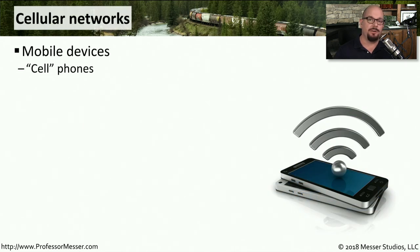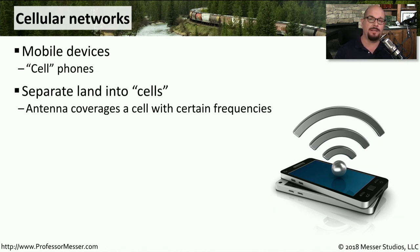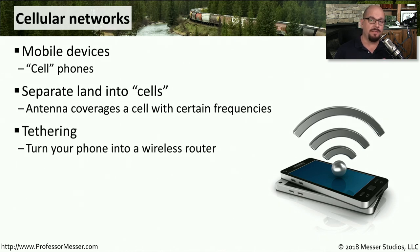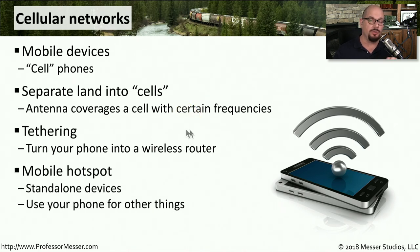Modern cellular networks allow us to have internet connectivity from practically anywhere. We now have mobile phones that allow both voice and data access simultaneously. These cellular networks have many antennas set up across geographical areas separated into cells — that's where the name comes from — and our mobile devices use these antennas to communicate with the internet. You can also connect a laptop to your mobile phone via a wire for internet access, which is called tethering. Connecting multiple devices over 802.11 wireless turns your phone into a mobile hotspot, allowing anyone nearby to share your internet connection.